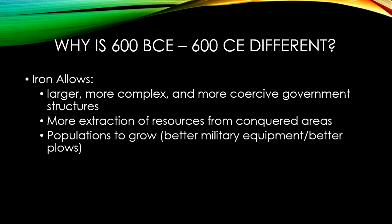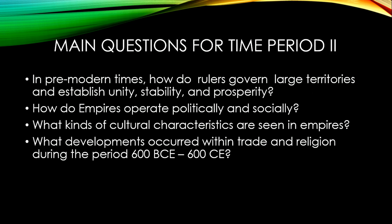Governments need greater control to keep together such a large entity like Persia, which covered millions of square miles. Our main big question for Time Period 2 is: how on earth did they do it? In pre-modern times, how do rulers manage to govern large territories and establish unity, stability, and prosperity without modern technology, modern roads, communication systems, or modern infrastructure — although they did really well with the technology they had?